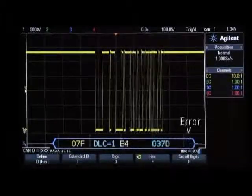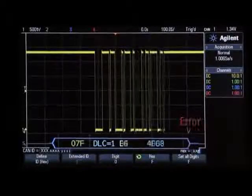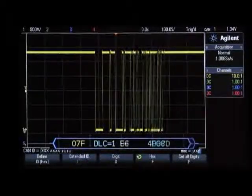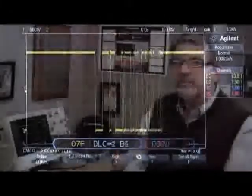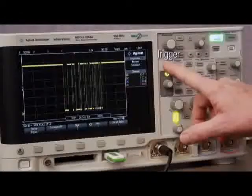Note that we can also see a red error message at the end of this decoded frame. The scope is randomly detecting error frames while triggering on this frame. Let's now set up the scope to trigger on CAN error frames.